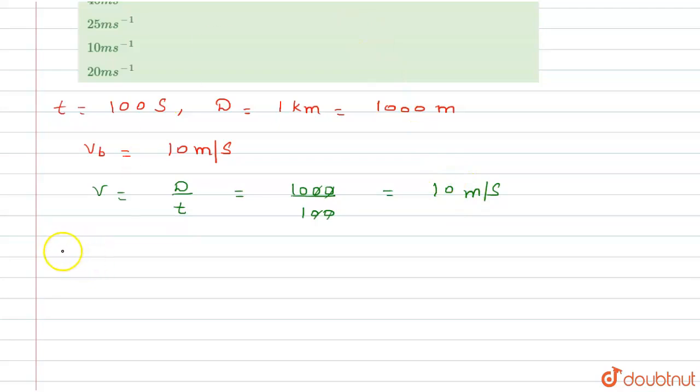Vs is the velocity of the scooter and Vb is the velocity of the bus. As we know, the relative velocity V equals Vs minus Vb equals 10. From here we can calculate the value of Vs, which equals 20 meter per second.